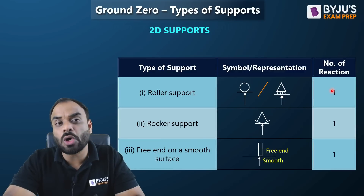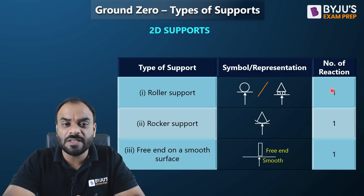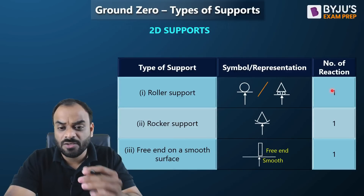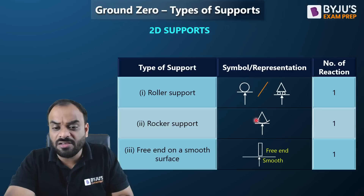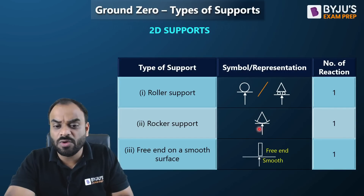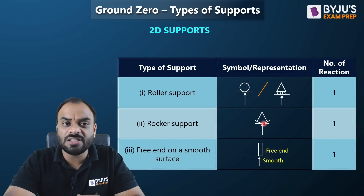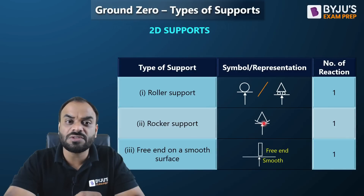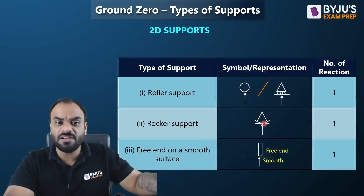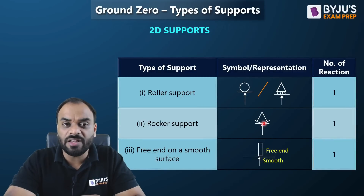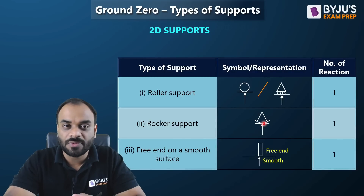The next support is the rocker support, which is similar to the roller support but with a key difference. Its symbolic representation is a triangle with a curved surface at the bottom. Again, only one reaction acts in the vertical direction. In a rocker support, horizontal displacement is limited, whereas in a roller support, infinite horizontal displacement can occur — this is the major difference between rocker and roller supports.